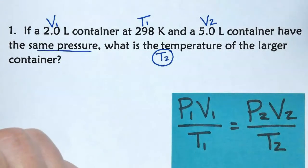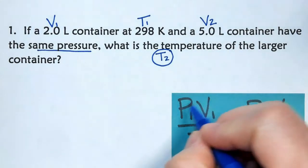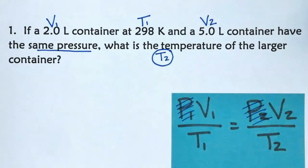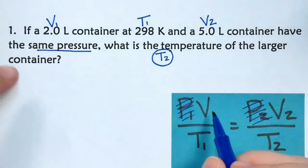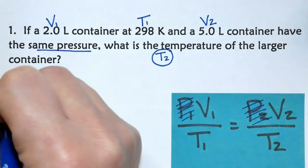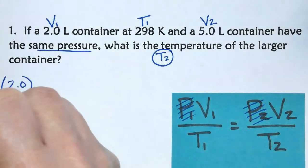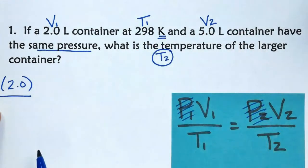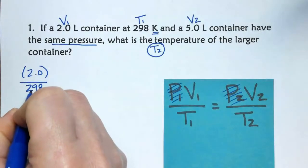Because it's the same pressure, that means pressure is constant, and therefore we can ignore the pressure in our equation. So I'm just going to cut out pressure, because pressure is constant. So now that we have our equation, it's going to be V1 divided by T1 equals V2 divided by T2.